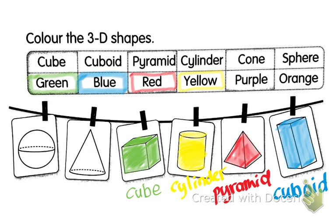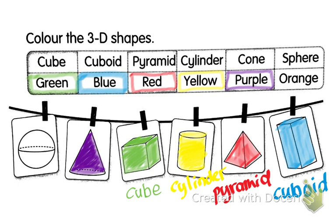Next one is cone. Cone, we have to color it in purple. Cone is like ice cream cone. Which one? This one is cone. Like a skittle, like ice cream cone, like nasi lemak packaging. C-O-N-E.